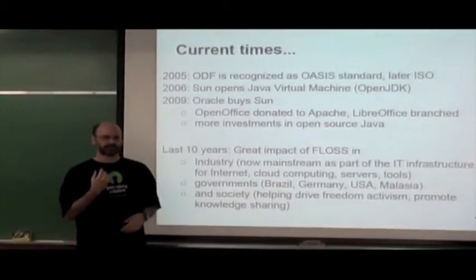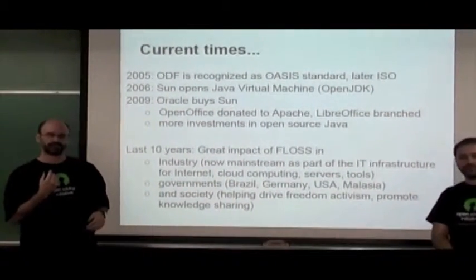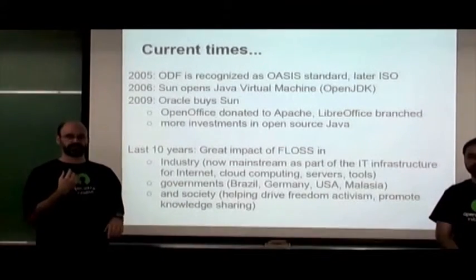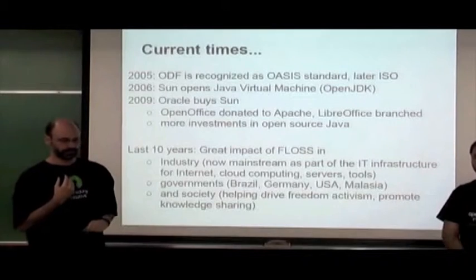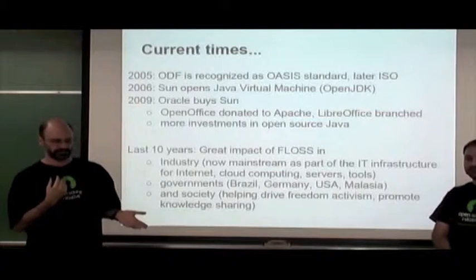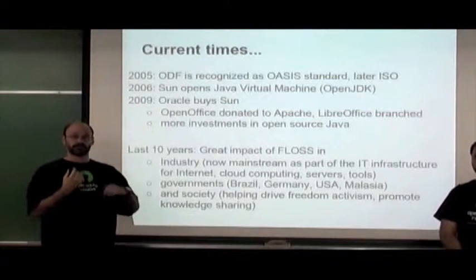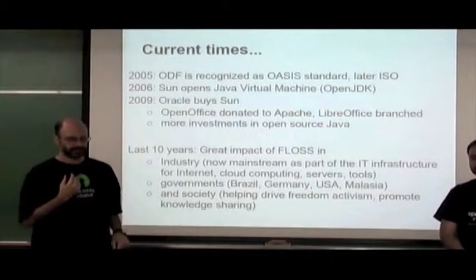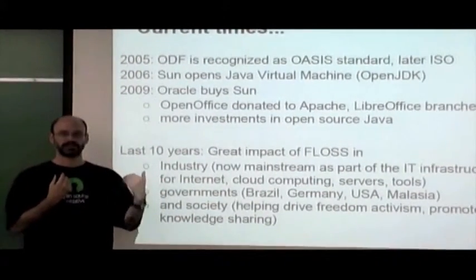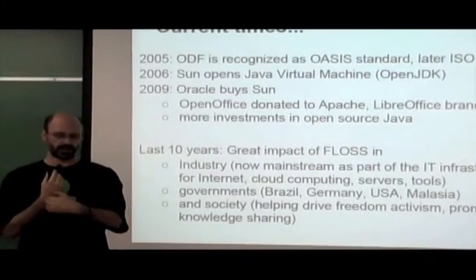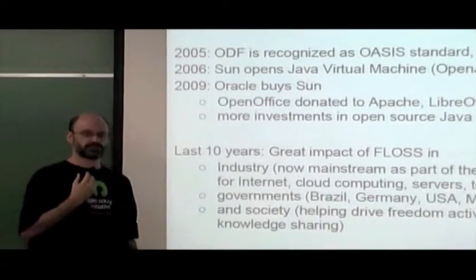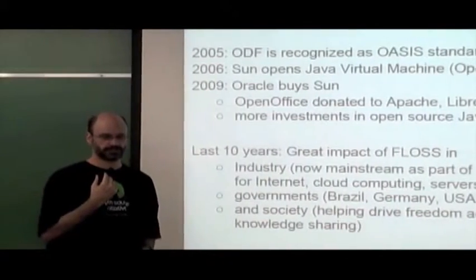More recently, ODF — the Open Document Format — became an OASIS standard and later an ISO standard. Sun opened the Java Virtual Machine as OpenJDK. Oracle bought Sun, and as a result OpenOffice was donated to Apache, and a LibreOffice branch was created. We see even more investments in open source Java after that.